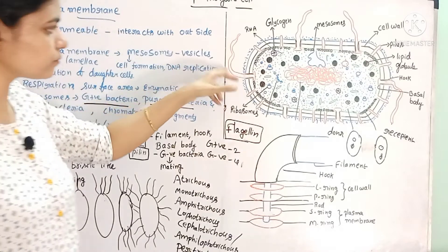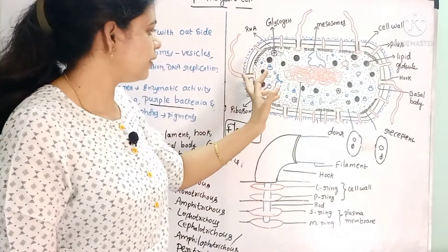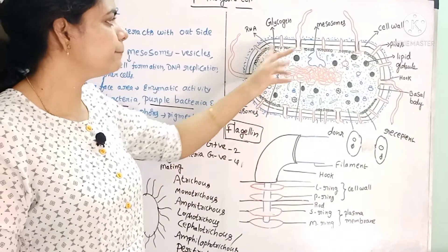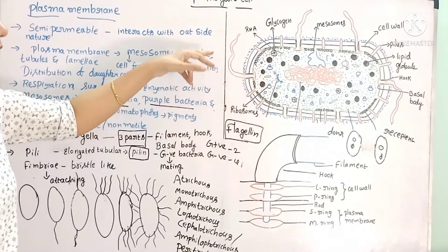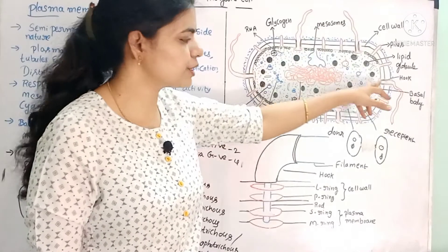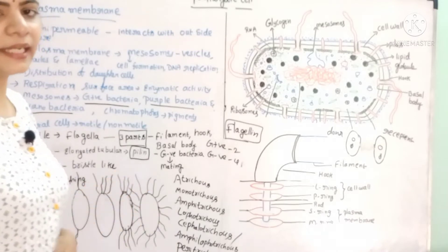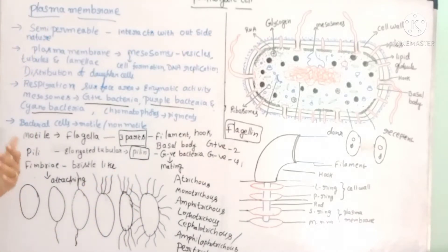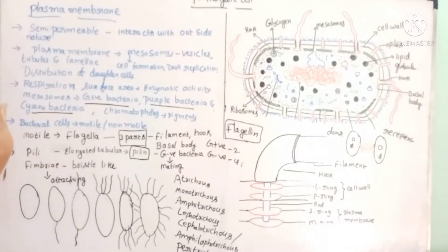Bacteria have surface structures. There are hair-like outgrowths such as flagella, and others. Flagella help bacteria with motility. Bacteria with flagella are motile, and those without flagella are non-motile.